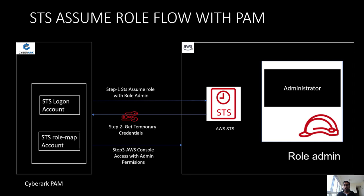This is the first workflow — how the entire integration is going to look between CyberArk and AWS. On the CyberArk PAM, we have to create two privilege accounts. The first is called the login account, where we onboard the AWS access key and secret access key, and we use those keys to communicate to AWS. The second account, called the role map account or STS role account, is where we configure parameters like AWS account number, role ARN, and a couple of other parameters I'll show during demonstration.